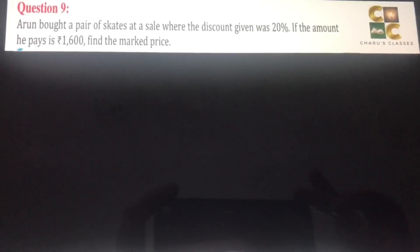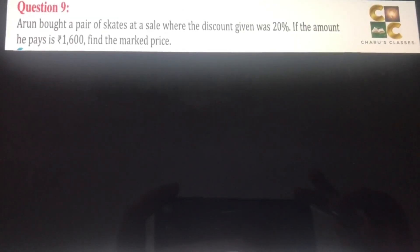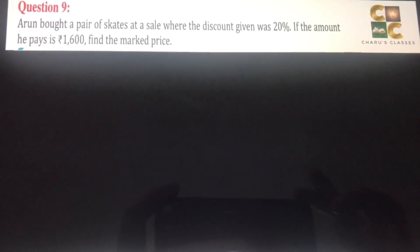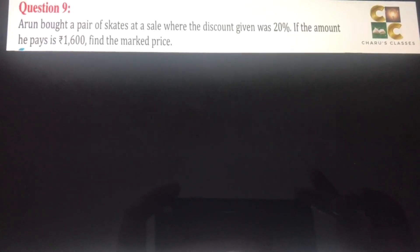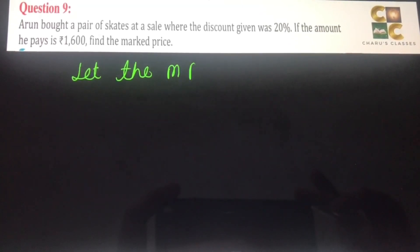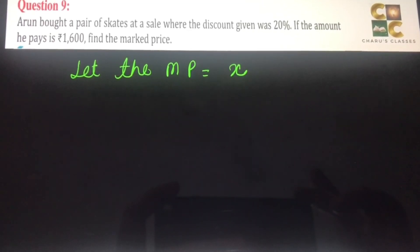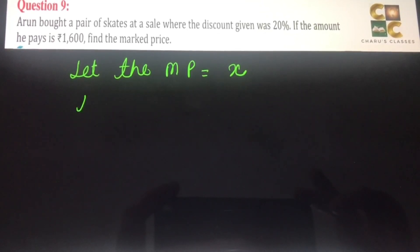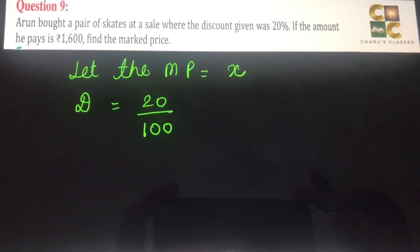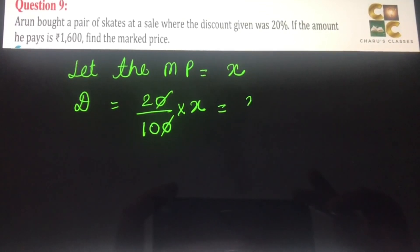Question number 9. Arun bought a pair of skates at a sale where the discount given was 20%. If the amount he pays is rupees 1600, find the mark price. Here we don't have mark price given, so let the mark price be X. The discount is also given on the mark price. So discount equals 20% of X, which will be X by 5.